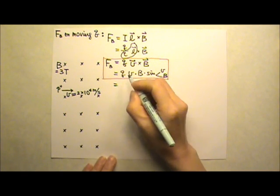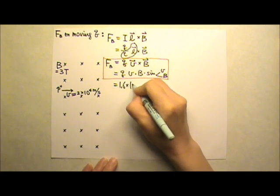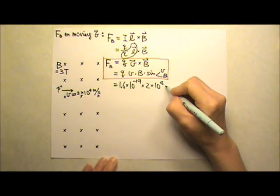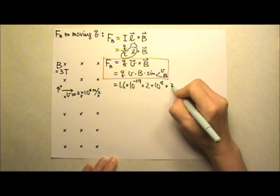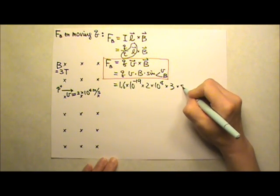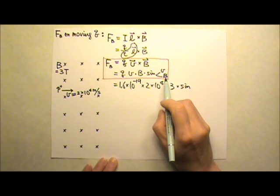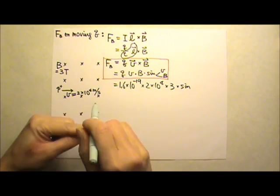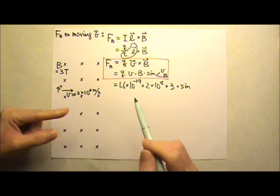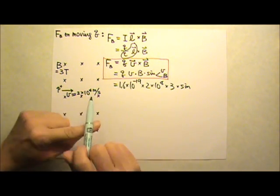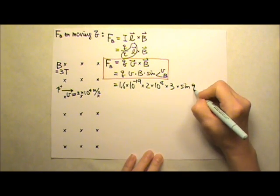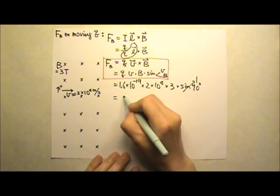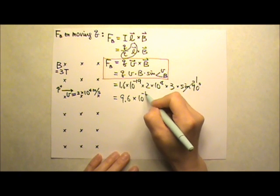The charge of the proton is the elementary charge, 1.6 times 10 to the negative 19th Coulombs. The speed is 2 times 10 to the fourth meters per second, and the magnetic field strength is 3 teslas. The angle between the velocity and the magnetic field: velocity goes to the right, magnetic field goes into the paper, so the angle between them is 90 degrees — sine 90 degrees is 1. This gives us 9.6 times 10 to the negative 15th Newtons.